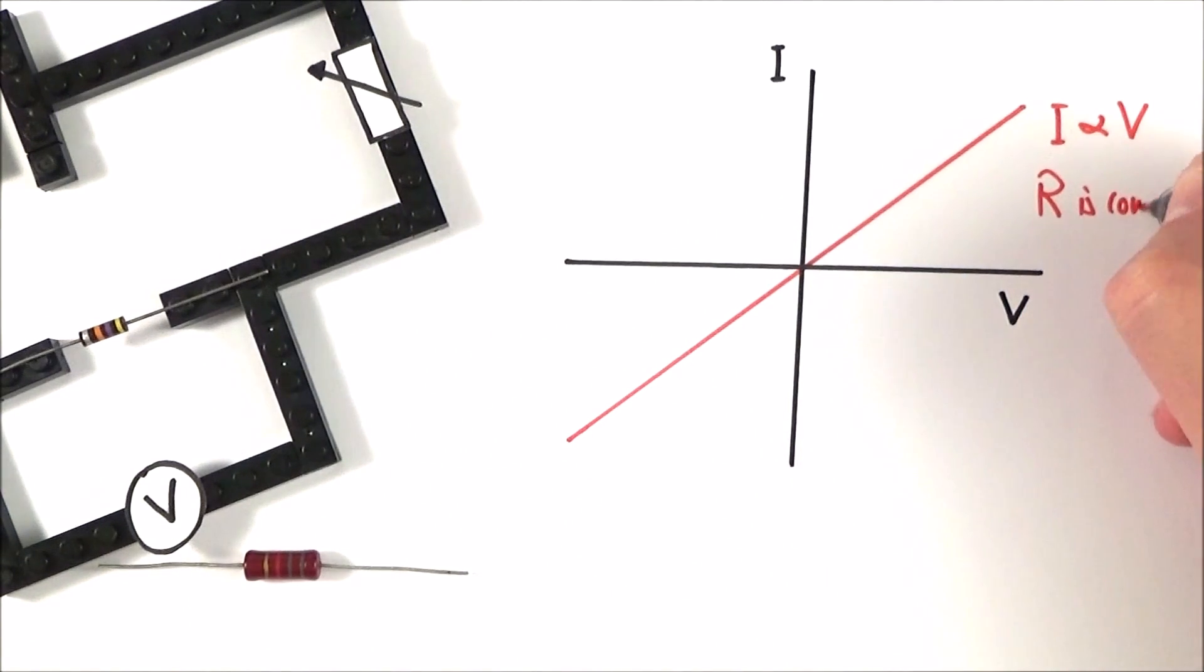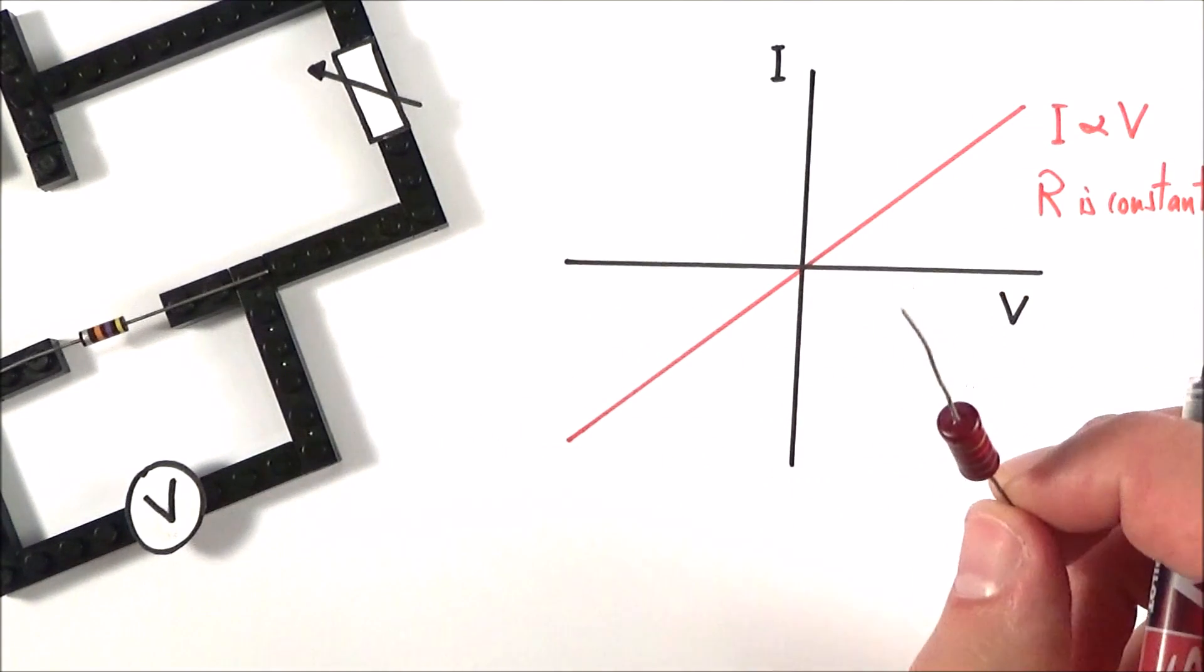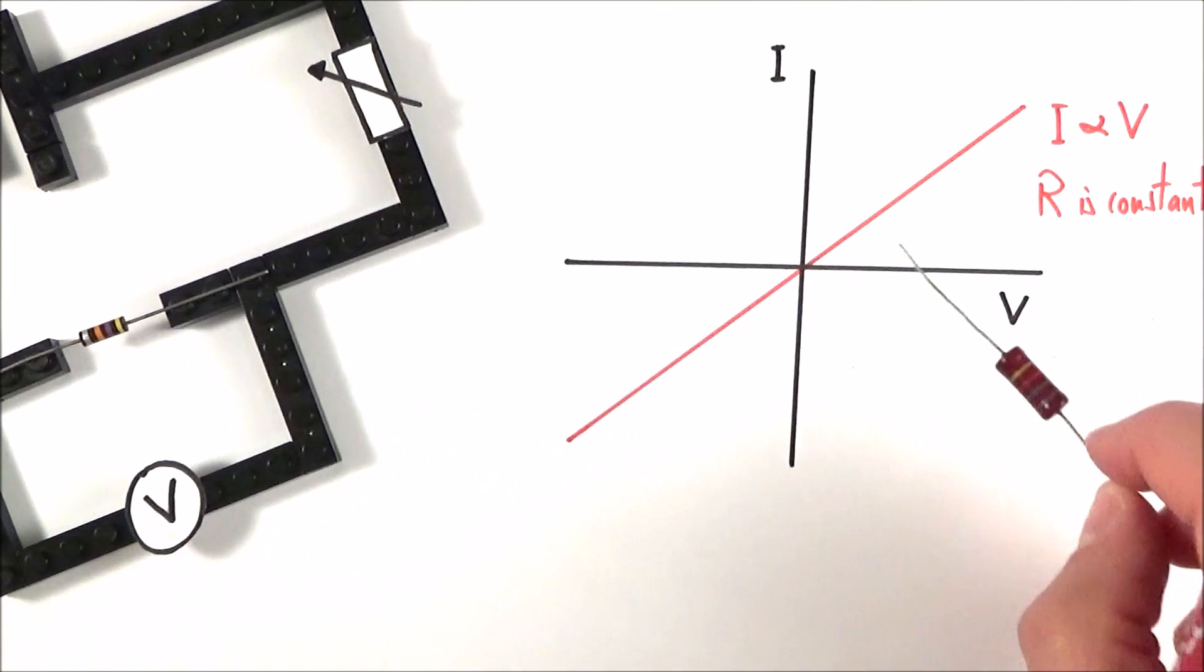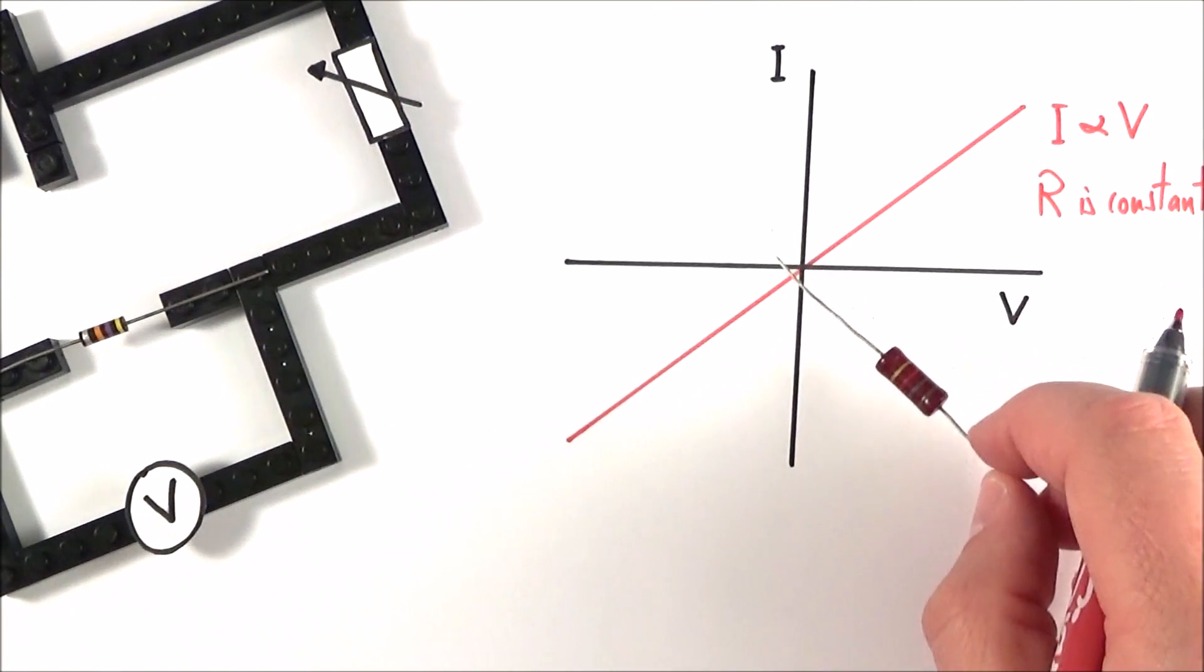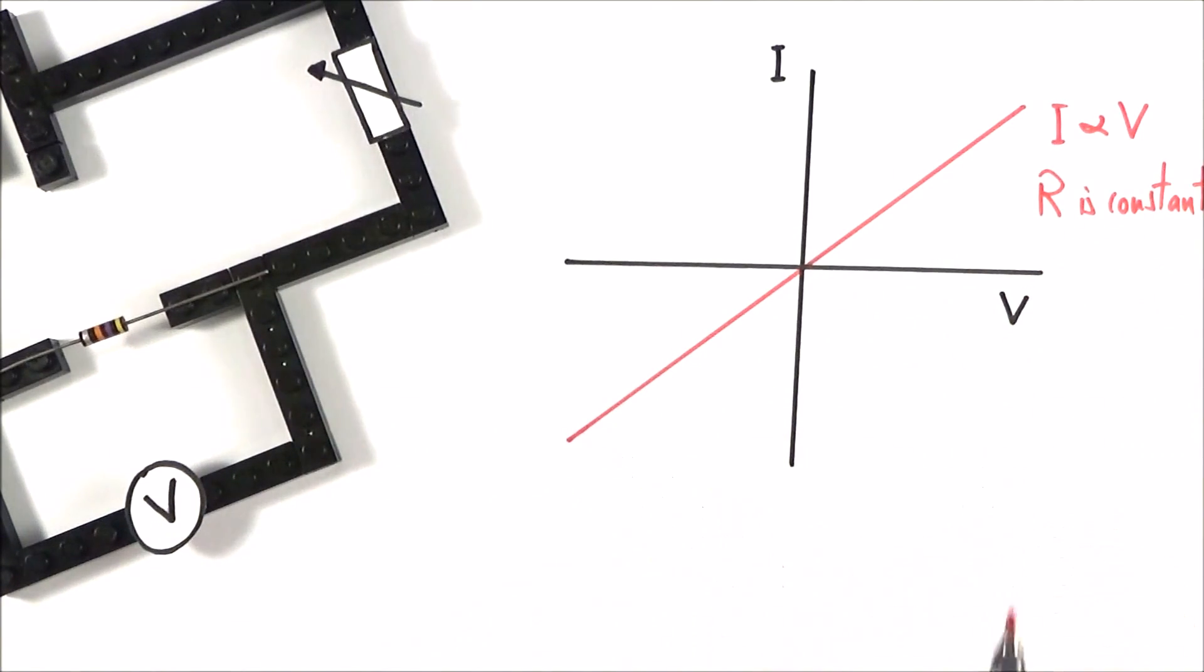Which again is the whole point. You want a 100 ohm resistor to always be 100 ohms. The other thing to note is this has the same characteristics if the current is going forwards or backwards in that circuit.